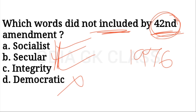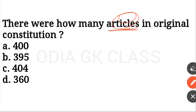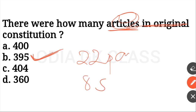How many articles are there in the original Constitution? The original Constitution, adopted on 26 November 1949, had 395 articles, 22 parts, and 8 schedules.